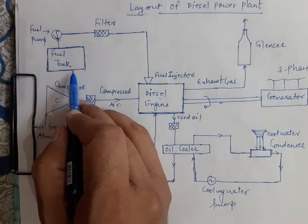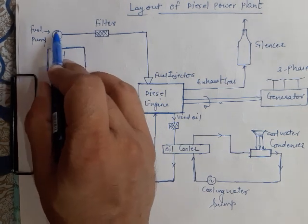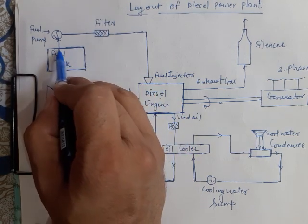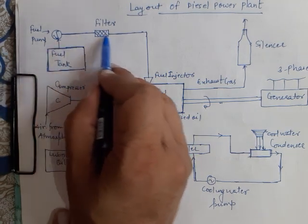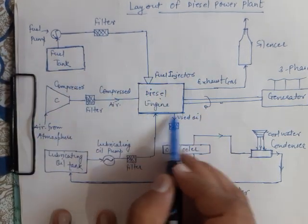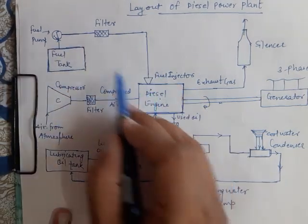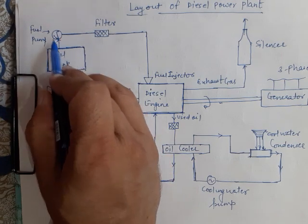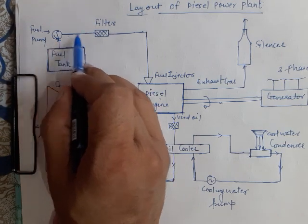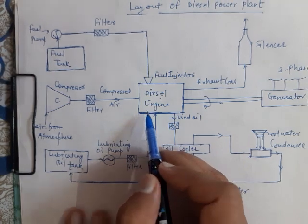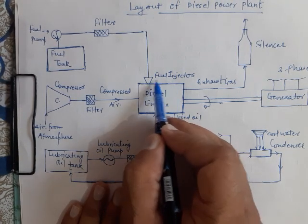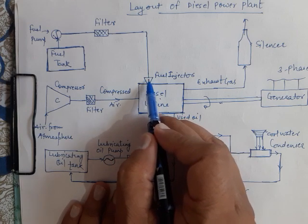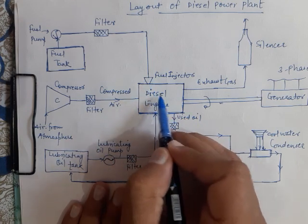There is a fuel tank, and a fuel pump supplies fuel from the fuel tank through a fuel filter into the diesel engine. There is also a fuel injector, inside which the fuel is atomized and vaporized before being injected inside the engine.